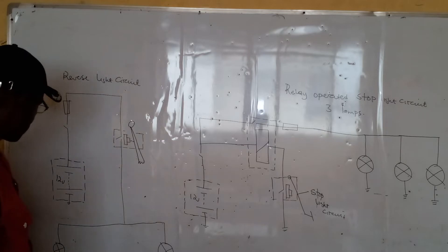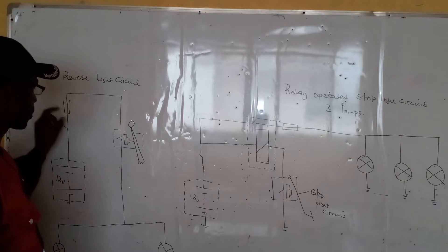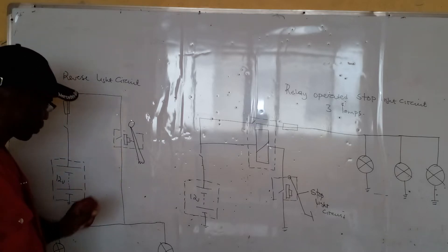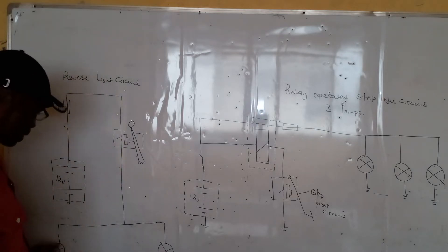The major components of this system are the battery, the fuse, the reverse light switch, and the lamps of the rear.